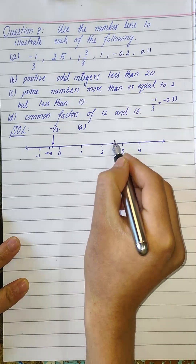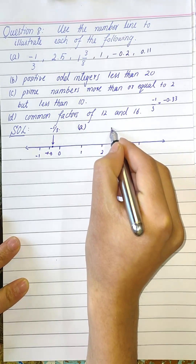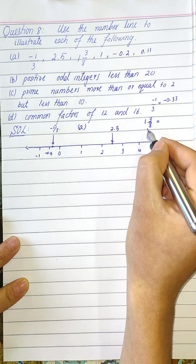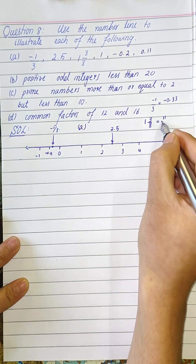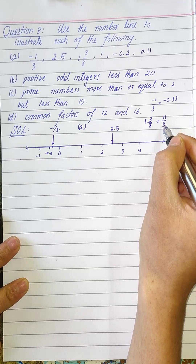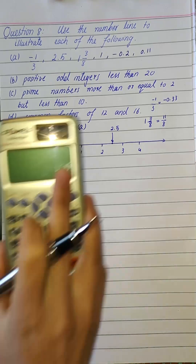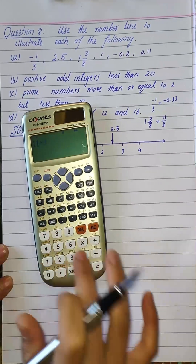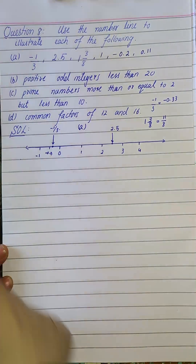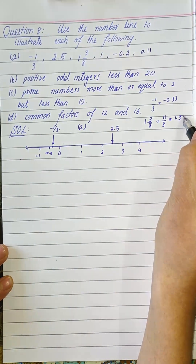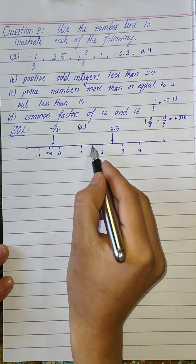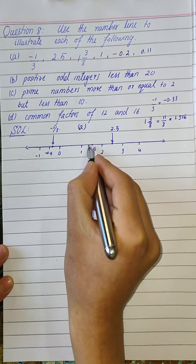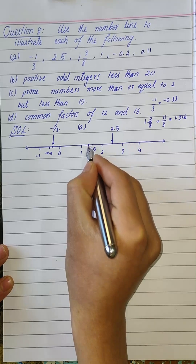Next we have 2.5, which is positive. Here is 2 and here is 3, and in between there will be 2.5 — so this is the point for 2.5. Then we have 1 and 3 over 8: 8 times 1 is 8, and 8 plus 3 is 11, divided by 8. If we divide 11 by 8 we get 1.375, so this value equals 1.375.